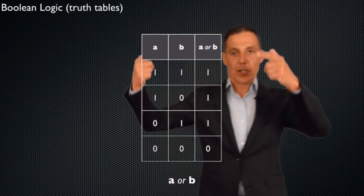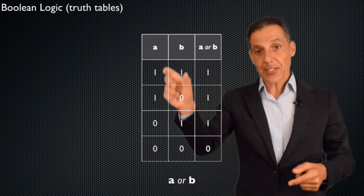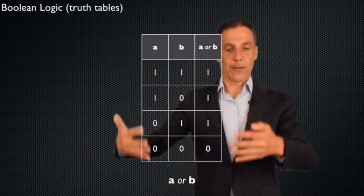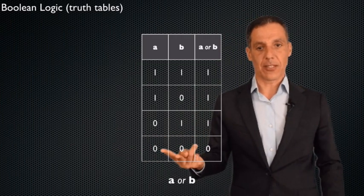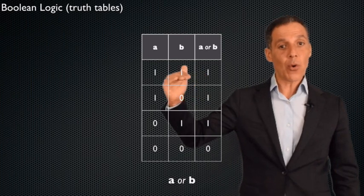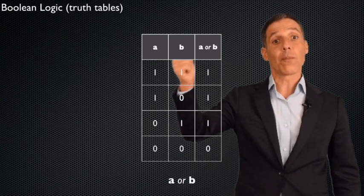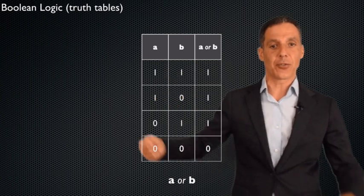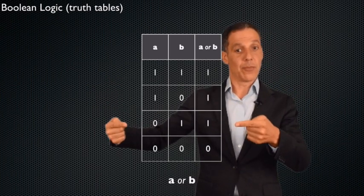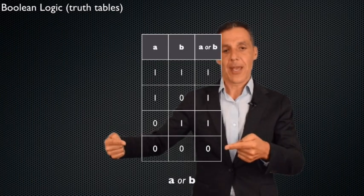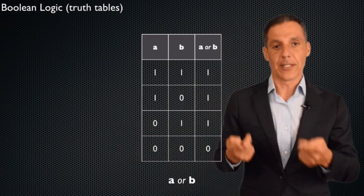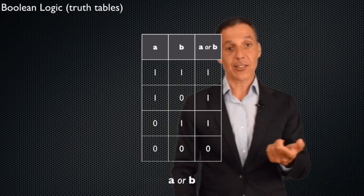All right, let's do the logical OR. Same truth table. This side stays exactly the same. Two columns for the input, one column for the output, and there are four rows corresponding to exact same thing. Zero, zero, zero, one, one, zero, one, one. Now remember that an OR is true if one or more of the statements are true. Here, they're both true, so the OR is true. A is true, so the OR is true. B is true, so the OR is true. And here, of course, neither are true, so the OR of them is false.